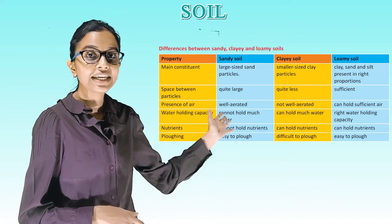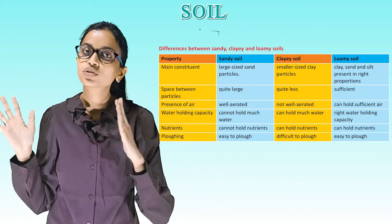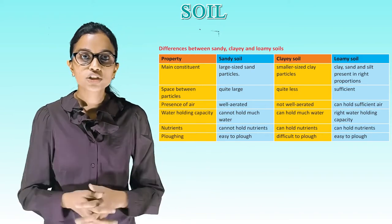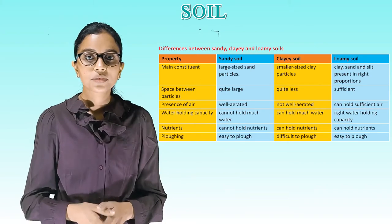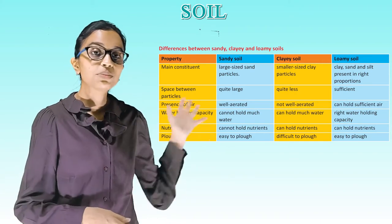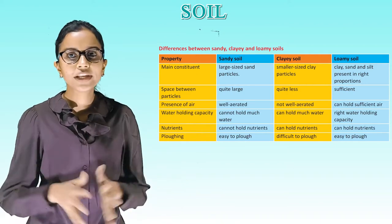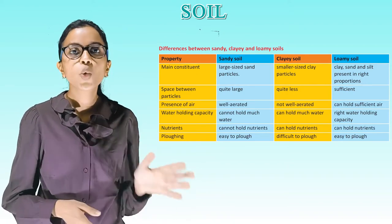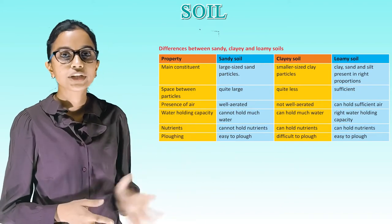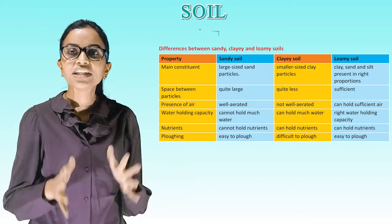Comparing sandy, clay and loamy soils by property: Main constituents — sandy soil has large sand particles; clay soil has smaller clay particles; loamy soil has clay, sand and silt in right proportions. Space between particles — quite large in sandy soil, quite less in clay, sufficient in loamy. Presence of air — well-aerated in sandy, not well-aerated in clay, sufficient air in loamy. Water holding capacity — cannot hold much water in sandy, can hold much water in clay, moderate in loamy. Nutrients — cannot hold nutrients in sandy, can hold nutrients in clay and loamy. Plowing — easy for sandy and loamy, difficult for clay.